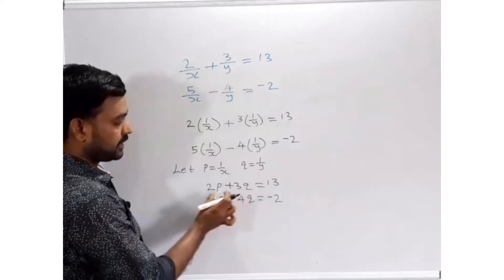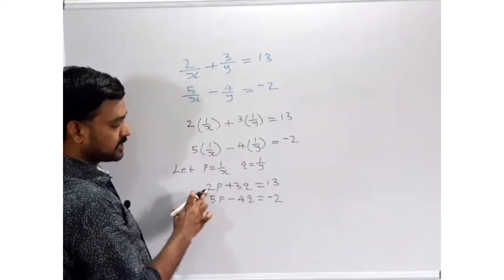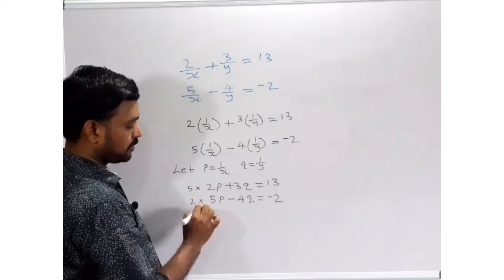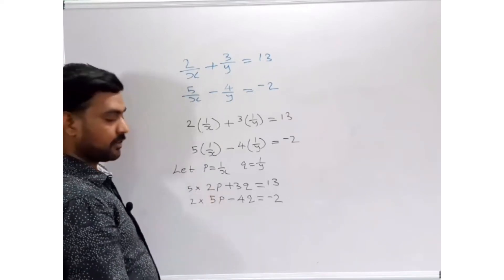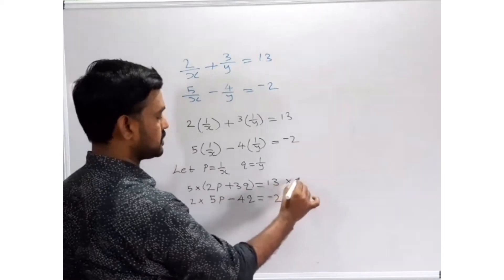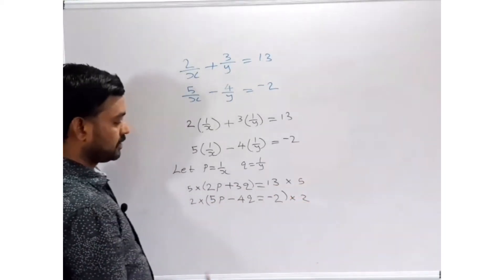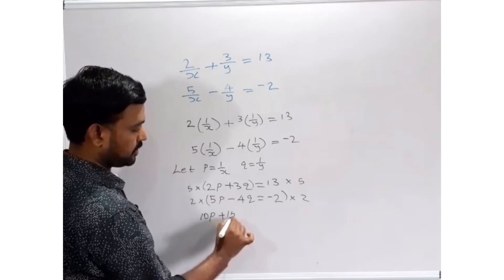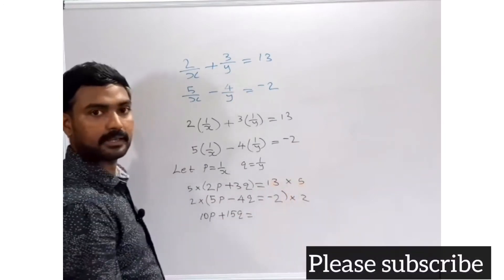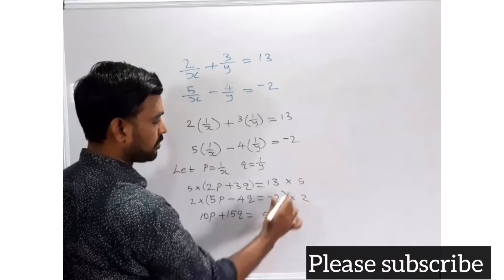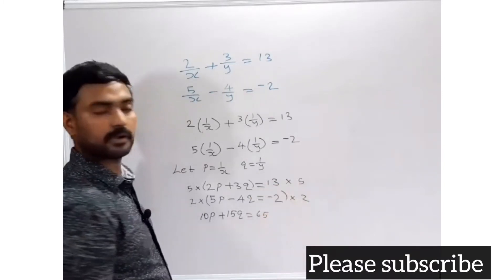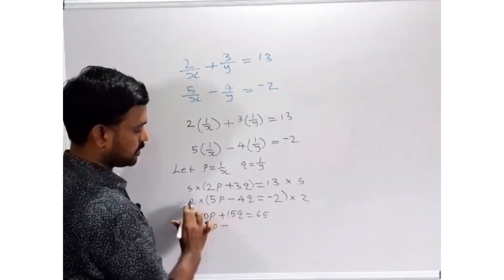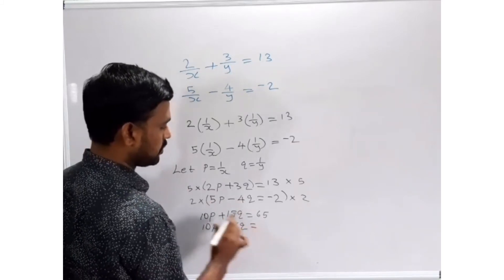For elimination, I selected p. Here the coefficient is 2, and in the second equation it is 5. So we multiply the first equation by 5 and the second equation by 2, so both coefficients of p become 10. Multiplying both sides: 5 × 2 = 10p, 5 × 3 = 15q, 5 × 13 = 65. So the first becomes 10p + 15q = 65. Second equation: 2 × 5 = 10p, 2 × 4 = 8q, 2 × (-2) = -4, giving 10p - 8q = -4.